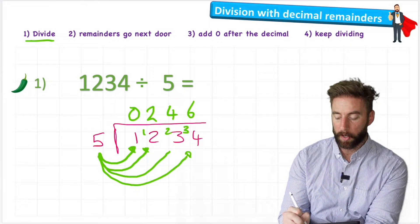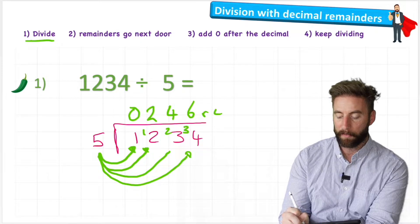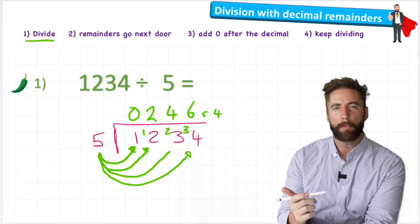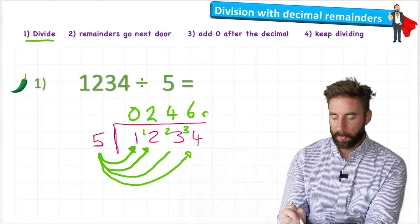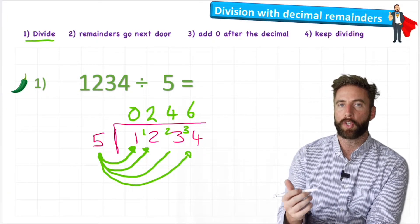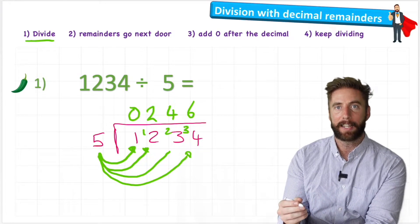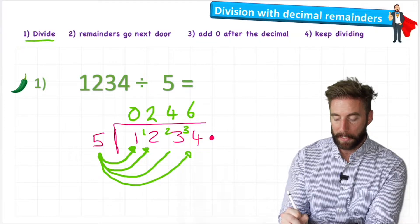Because usually what we could do is we could just write remainder four up here, but we're trying to upskill our work here and do something a bit more formal. So let's get rid of that. And let's think about what we're trying to achieve. We're trying to achieve a decimal remainder. So therefore, it makes sense that we should have a decimal in place.